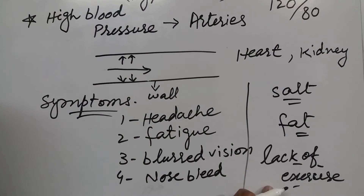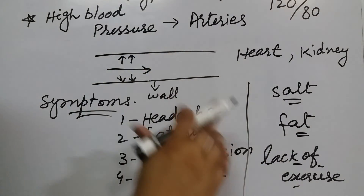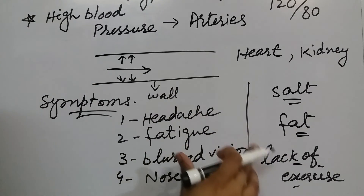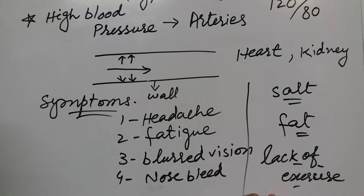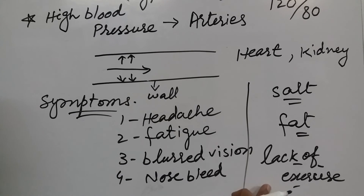High blood pressure کی causes میں شامل ہیں: lack of exercise، fatty food لینا، اور زیادہ salt intake کرنا — یہ سب چیزیں high blood pressure کا باعث بنتی ہیں۔ اگر ہم ان چیزوں کا خیال رکھیں تو blood pressure کو control کر سکتے ہیں۔